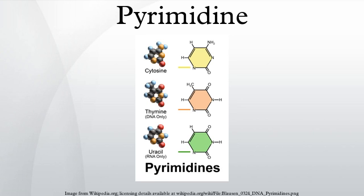These hydrogen bonding modes are for classical Watson-Crick base pairing. Other hydrogen bonding modes are available in both DNA and RNA, although the additional 2'-hydroxyl group of RNA expands the configurations through which RNA can form hydrogen bonds.